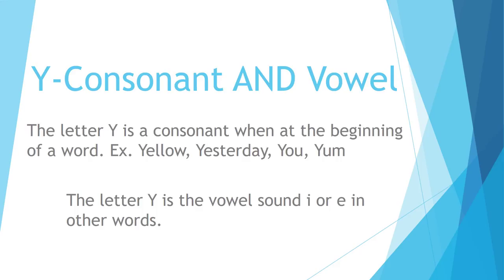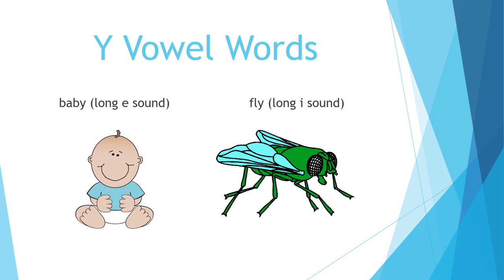The letter Y is a vowel sound when it makes the I or E sound, meaning it's somewhere in the middle or at the end of a word. For example, in the word 'baby,' you hear the long E sound at the end. Also the word 'fly' — that's the long I sound. So Y as a vowel can have a different vowel sound, just like the E and the I.